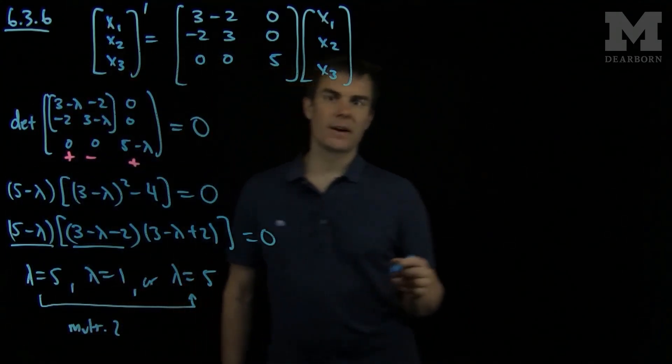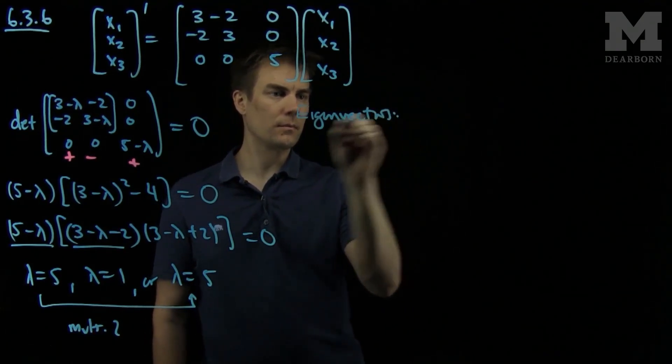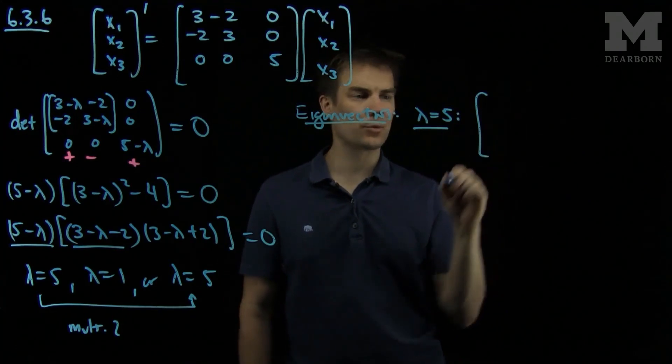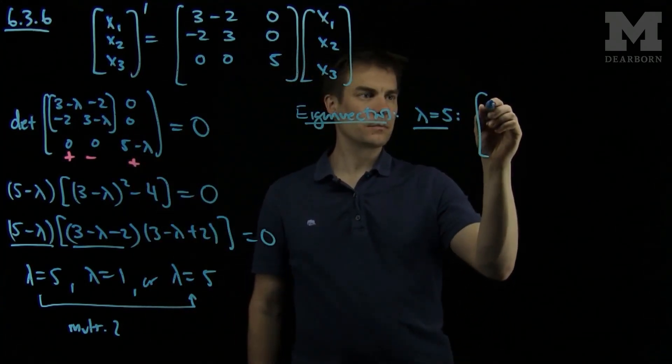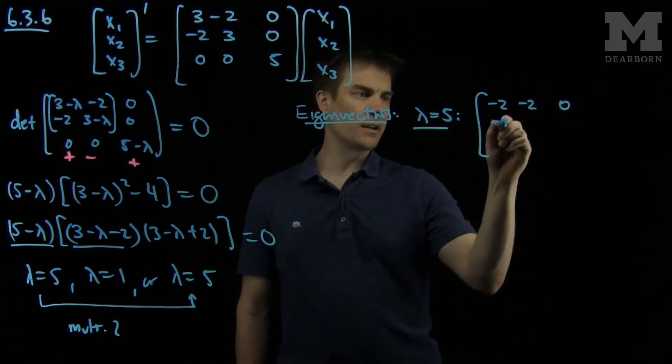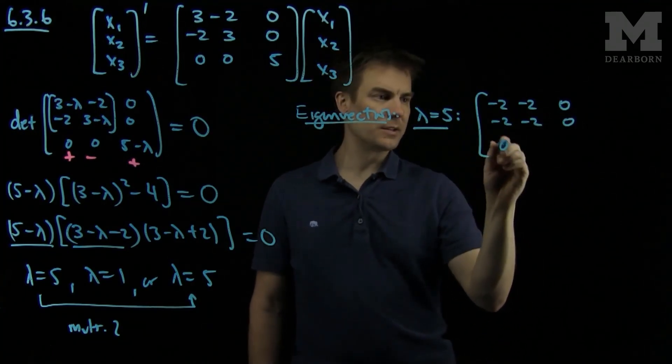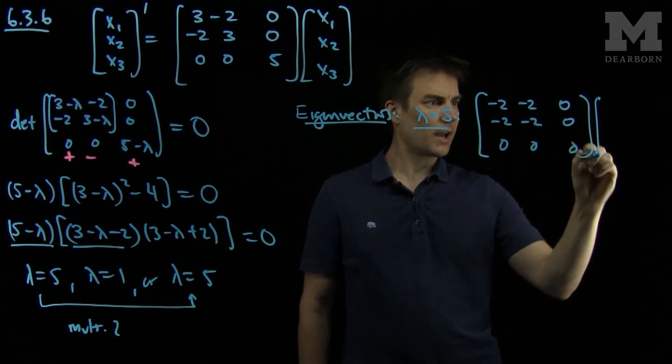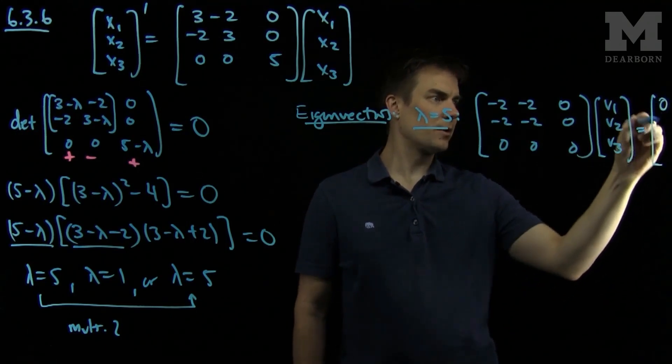Now we need to find the eigenvectors. The first one that corresponds to λ = 5: if we subtract 5 from the main diagonal, we'll be left with the matrix [-2, -2, 0; -2, -2, 0; 0, 0, 0]. And I need to find [v1, v2, v3] that's in the null space of this matrix.